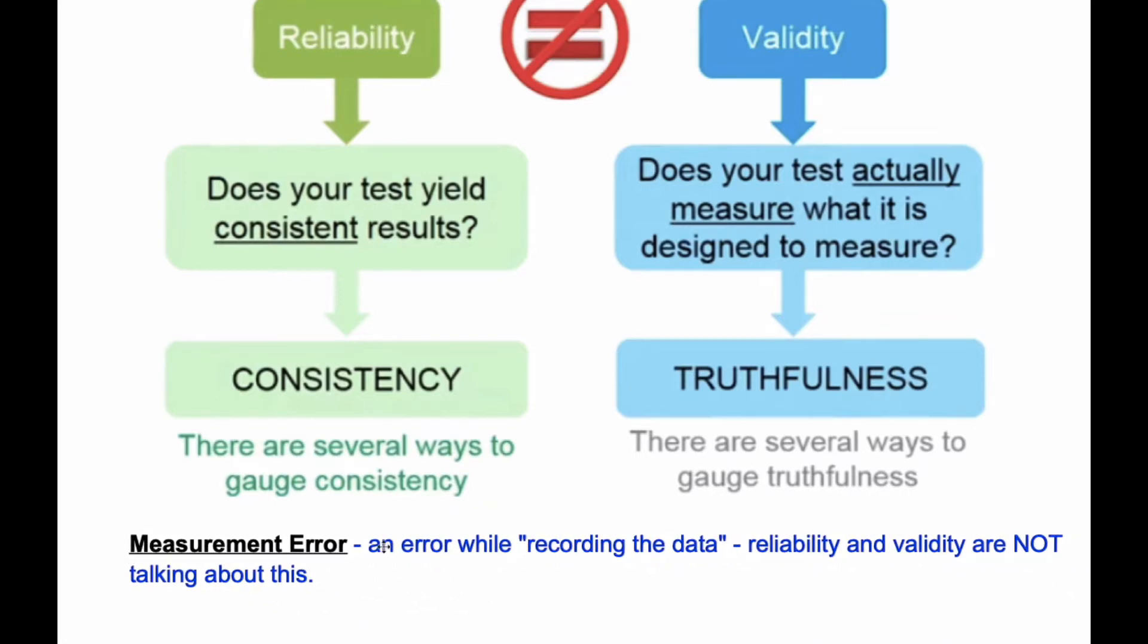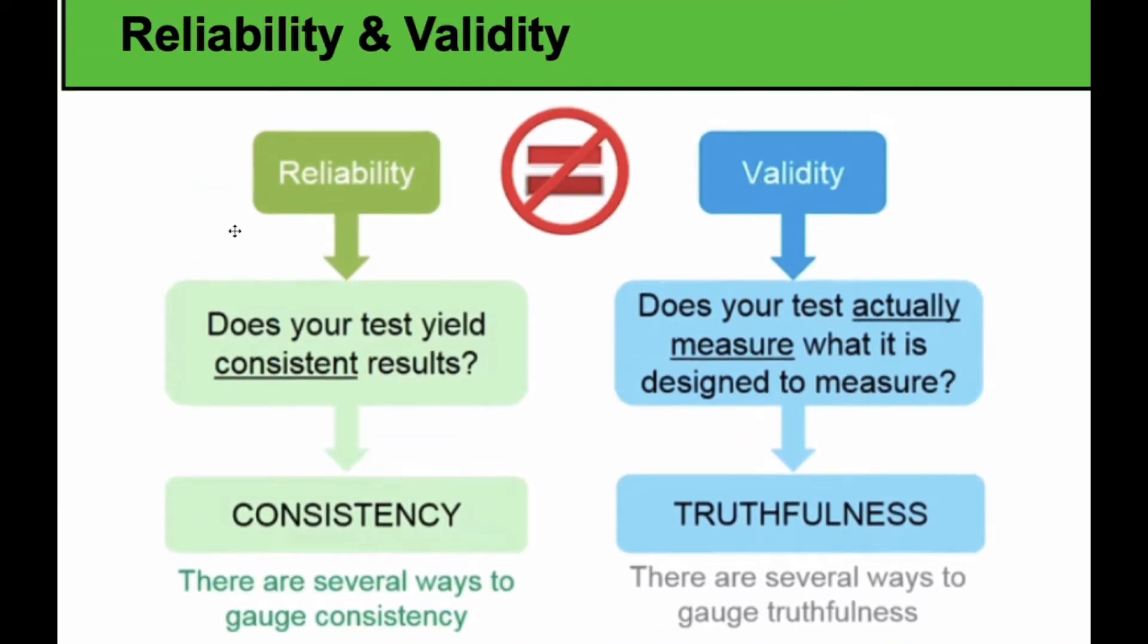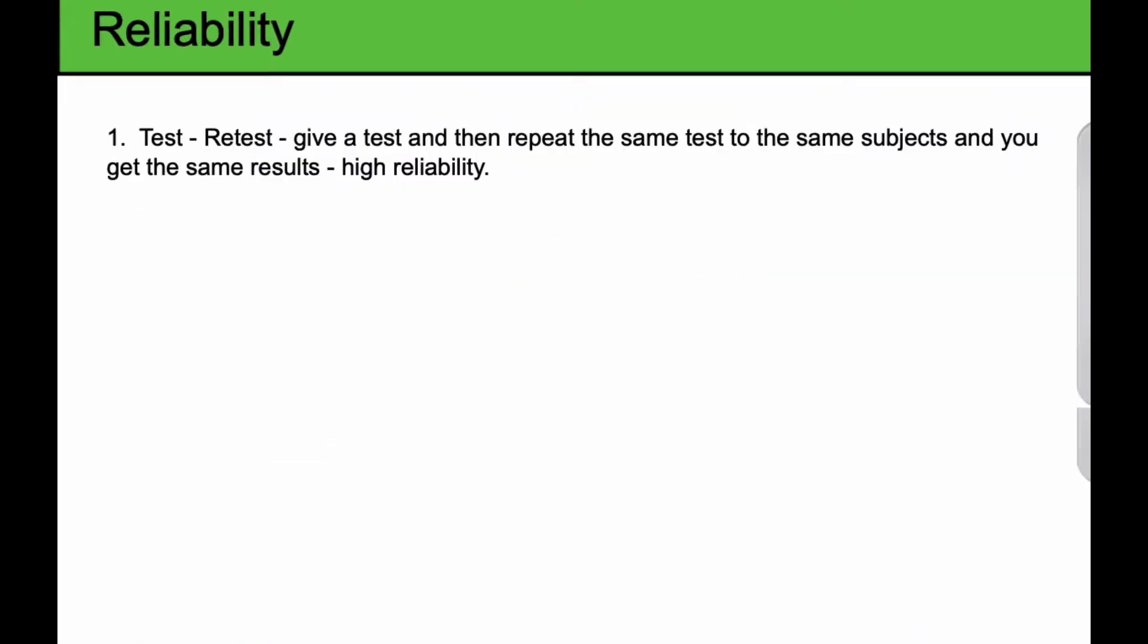In a sense, an error while recording the data, reliability and validity are not going to talk about this. That means like the researcher missputs down some information or there's actually in the measuring itself, like a typo, those kinds of mistakes. We're talking about if these tests are done 100% accurately, are they reliable and are they valid? One form of reliability testing that we can do is a scenario called test and retest.